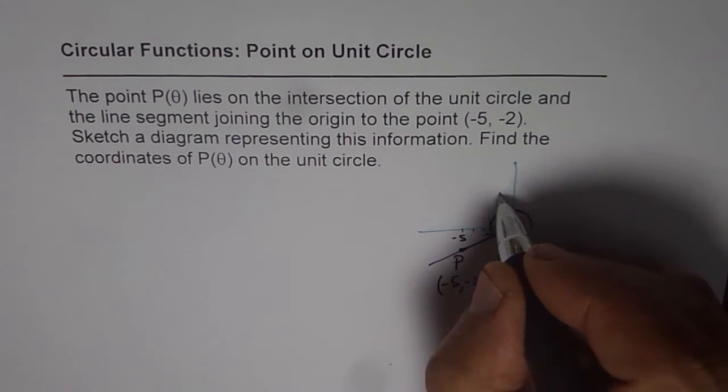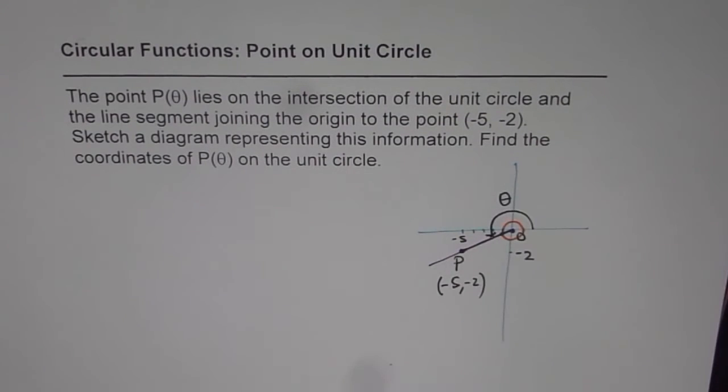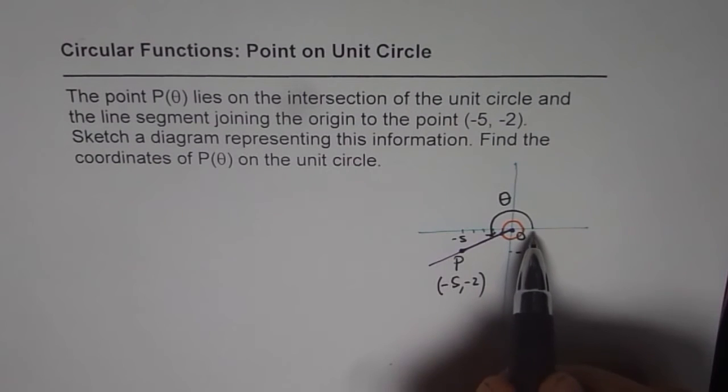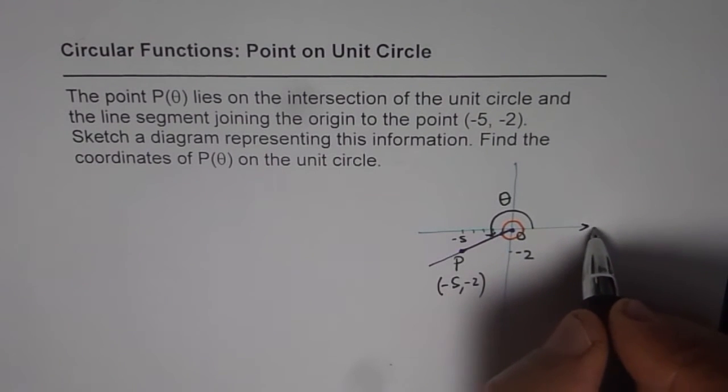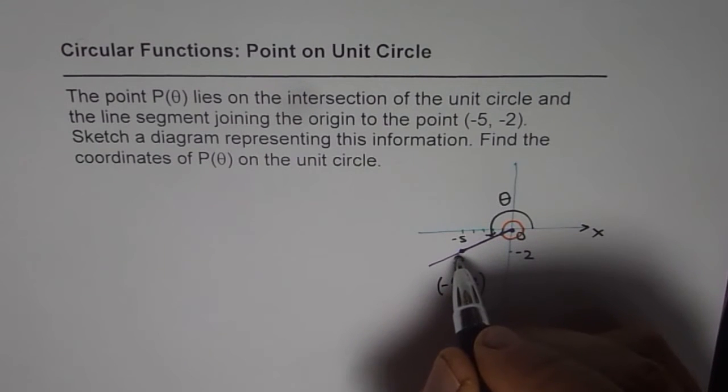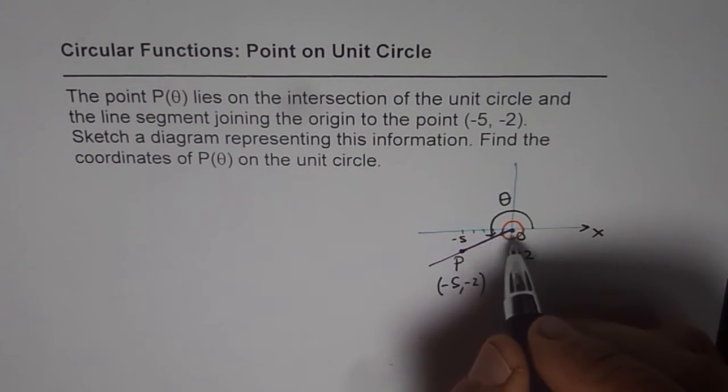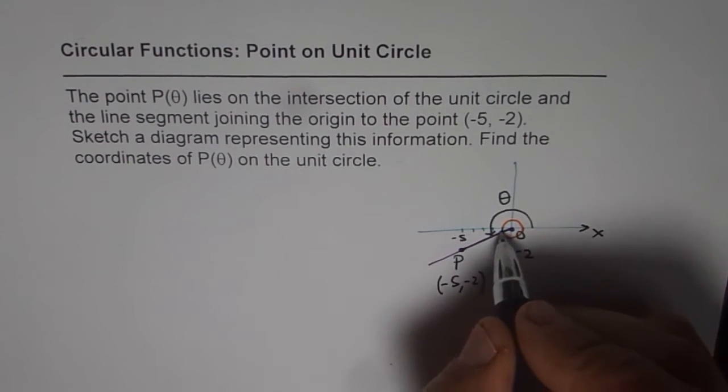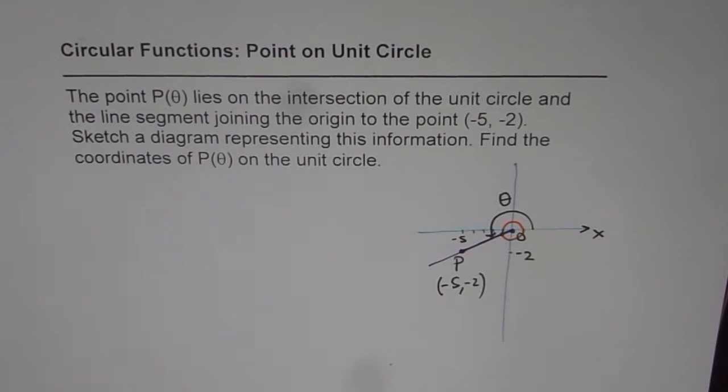Theta is the principle angle which we are going to measure from positive x-axis. And that becomes our terminal arm. So we have to find this particular coordinate. How are we going to find it?